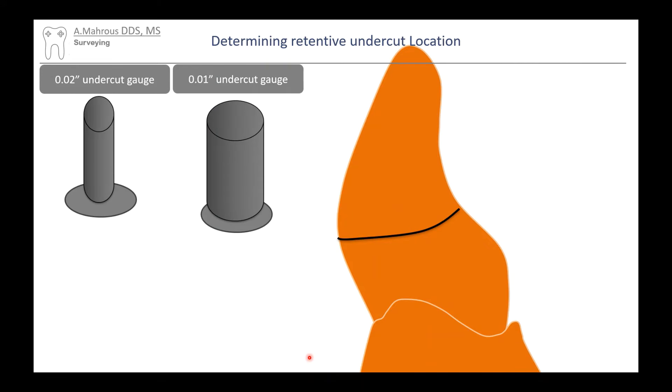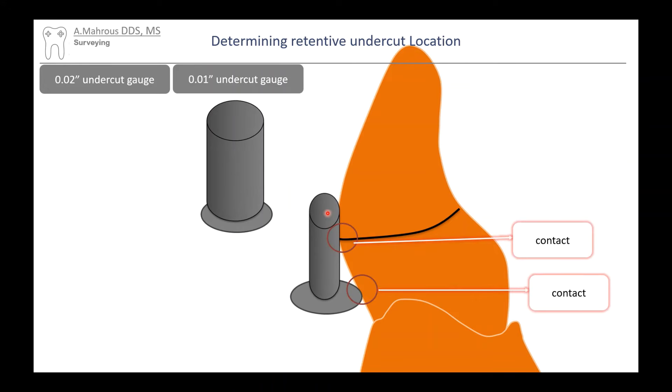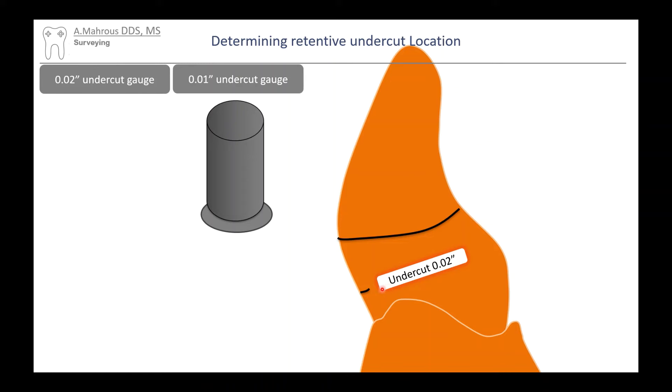Let's assume that this is a cast and this is a tooth that you've surveyed on that cast. This black line represents your survey line, thus this is the height of contour. To measure how much undercut you've got here, you're going to pick one of the 0.02 undercut gauges and place it so that the shank and the disc are both contacting the surface of that cast. Usually, the shank will touch at the height of contour, which is also the survey line. Wherever the disc touches is considered a 0.02 undercut. You'll usually use a pencil to mark that area.